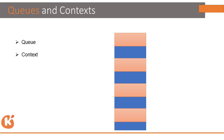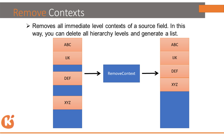Context change means when the context changes you get a new value. The pink one is the first context and the blue one is the second context — when the context changes, the blue one appears. In the node function, Remove Context puts all fields into a single parent context. After Remove Context, fields like ABC, IJK, DEF, and XYZ — previously in different contexts — all end up in the same context.